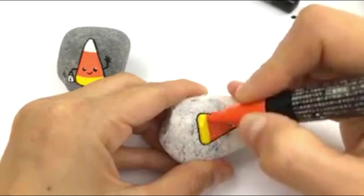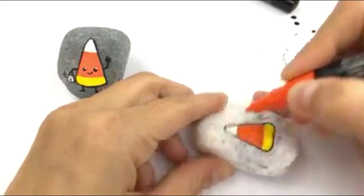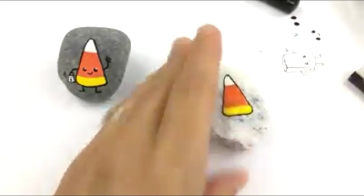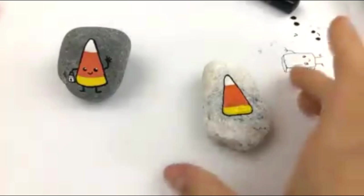And then when I do my second coat there you won't be able to see it at all. It's a little wet so I pulled a little bit of it in. That's okay. So we've got our basic candy corn and we're going to go in and add his arms.